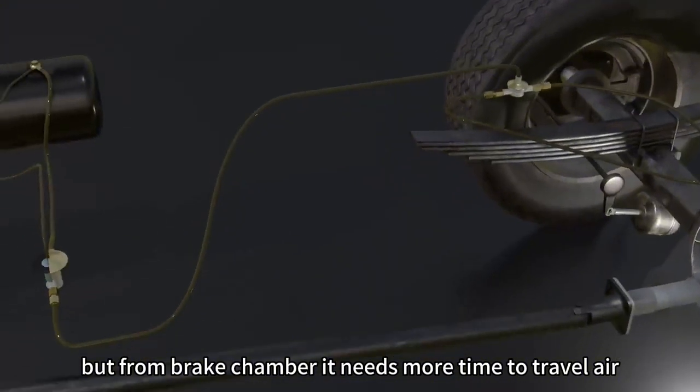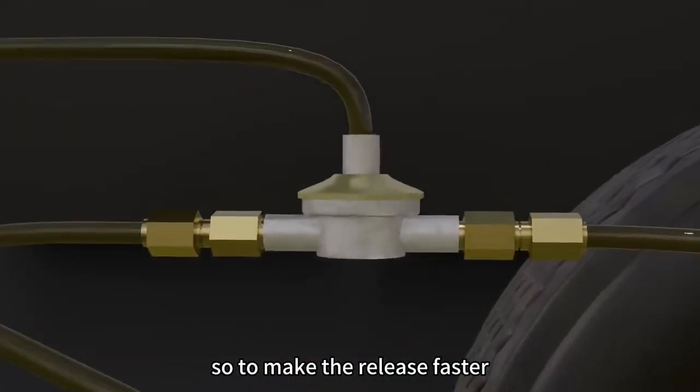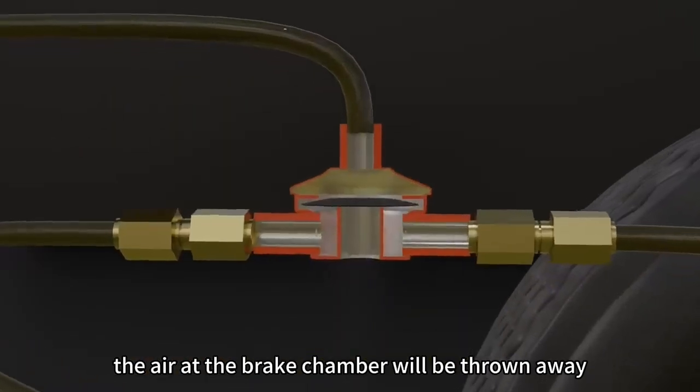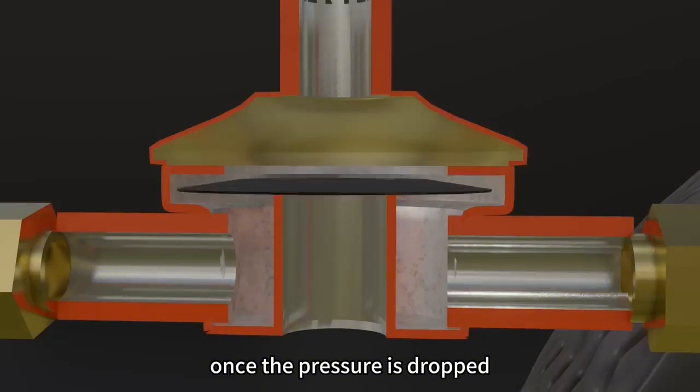But from brake chamber, it needs more time to travel air. To make the release faster, the air at the brake chamber will be thrown away from quick-release valve. This component works automatically once the pressure is dropped.